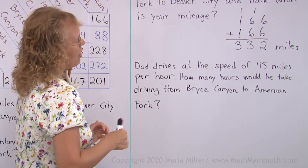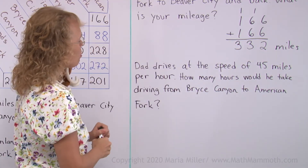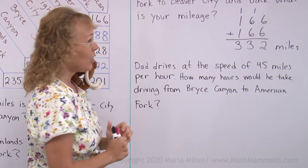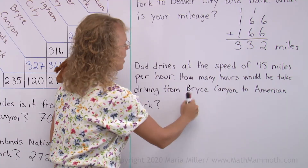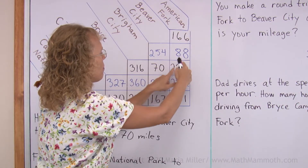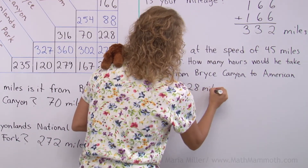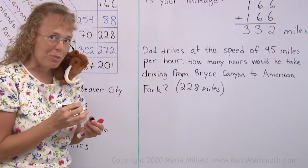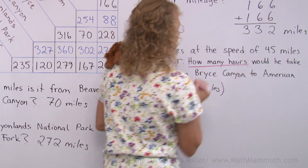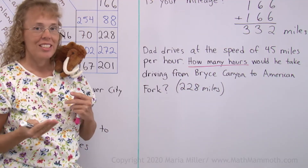Dad drives at a speed of 45 miles per hour — steadily every hour, 45 miles. How many hours would he take driving from Bryce Canyon to American Fork? Again, we need to use the chart. From Bryce Canyon to American Fork — here's our number: 228. The problem is asking how many hours would he take driving that distance. We're going to solve it in an easy way — we're going to make a chart.